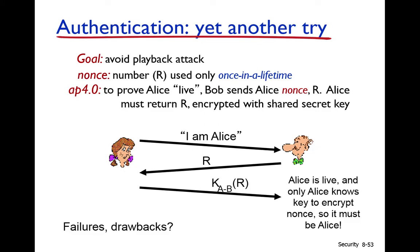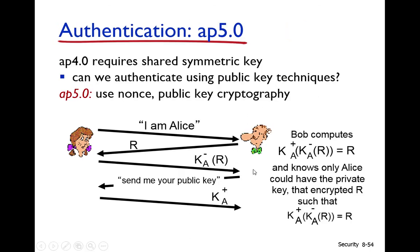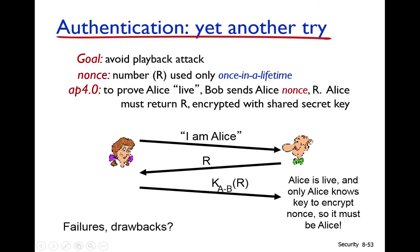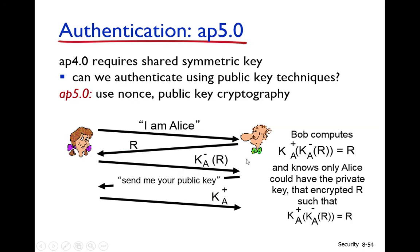However, Protocol AP 4.0 also has a failure. The shared symmetric key K_AB must be securely exchanged between Alice and Bob, which is difficult. As discussed in the disadvantages of symmetric key encryption, securely exchanging this key between Alice and Bob is a problem. So another protocol is proposed: Protocol AP 5.0.